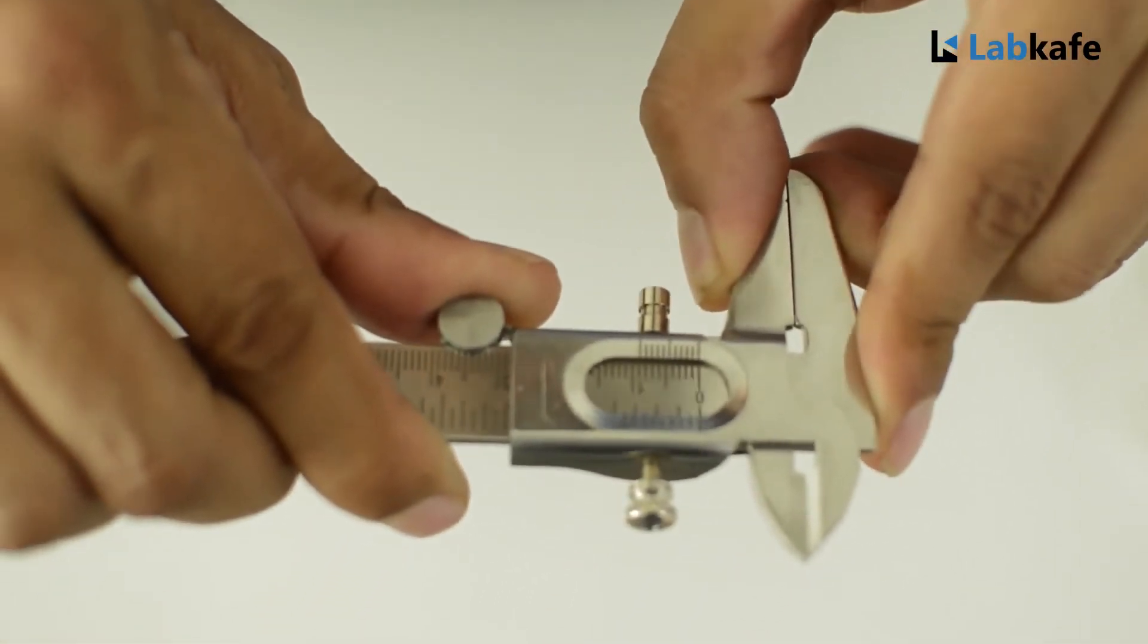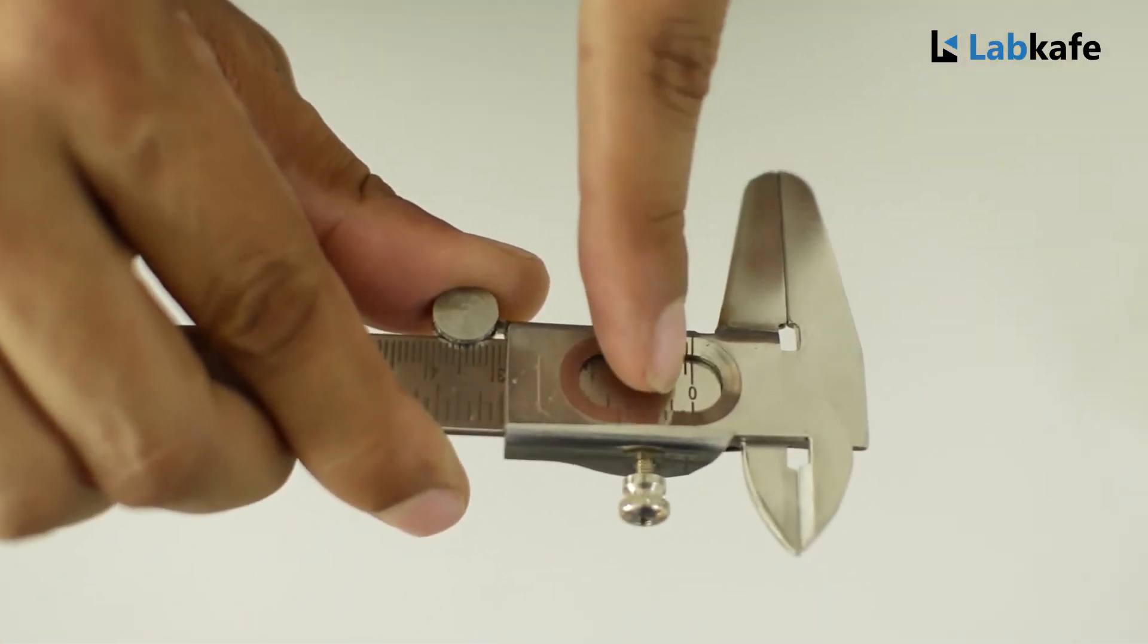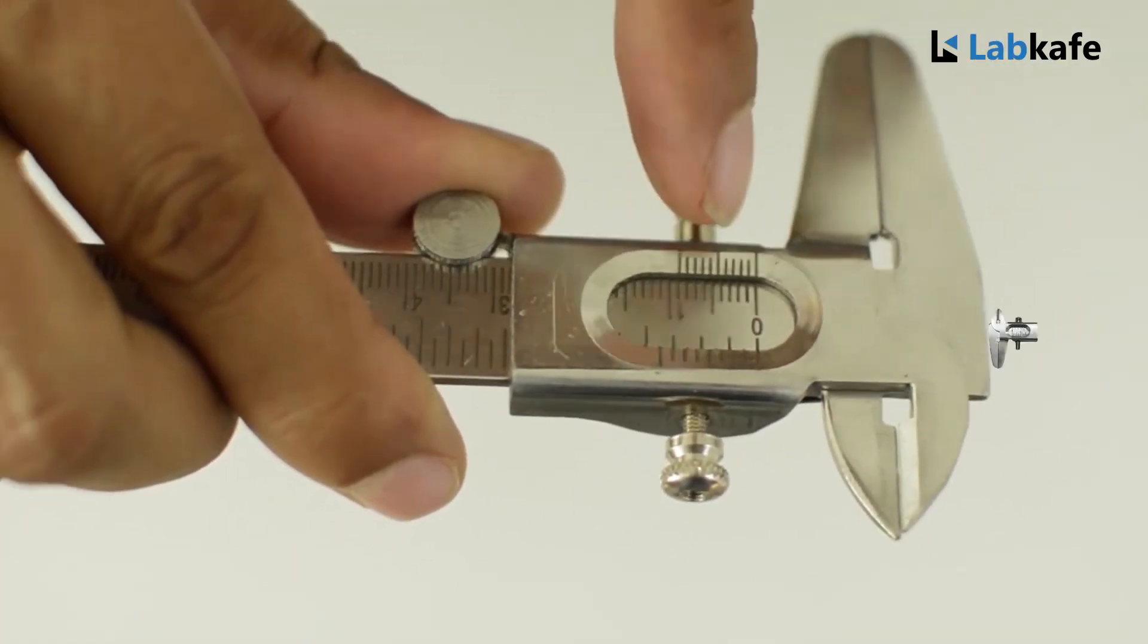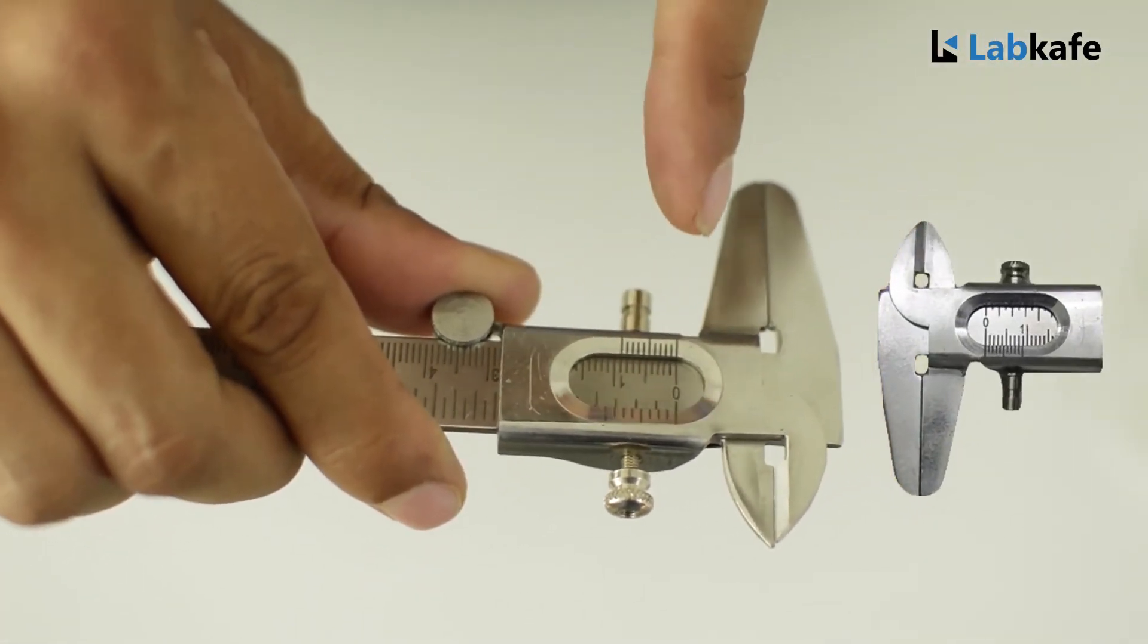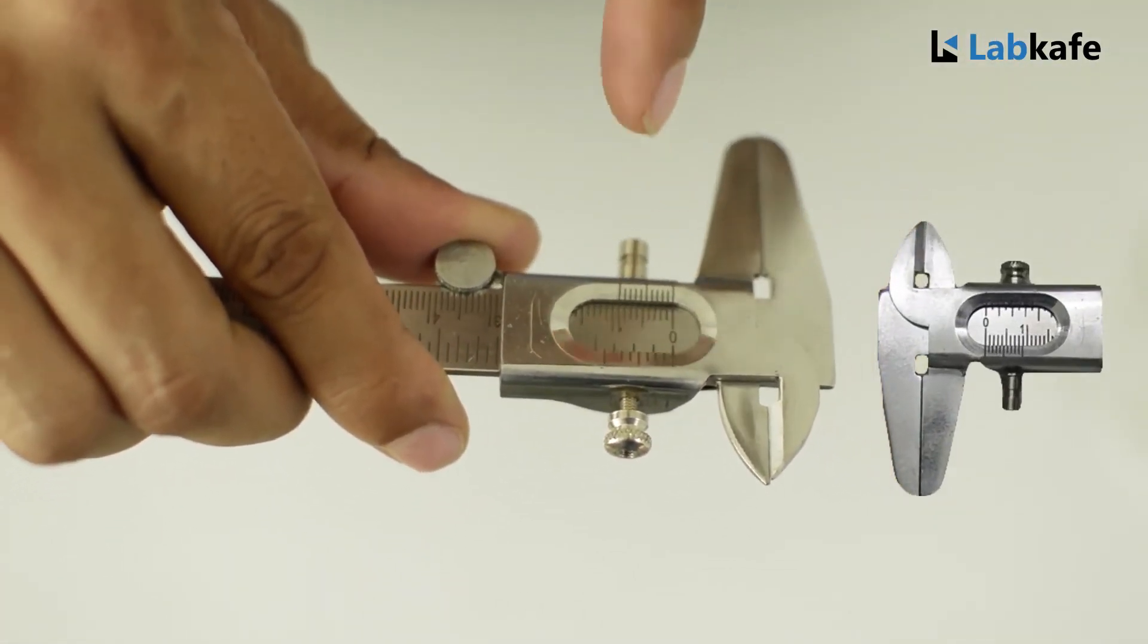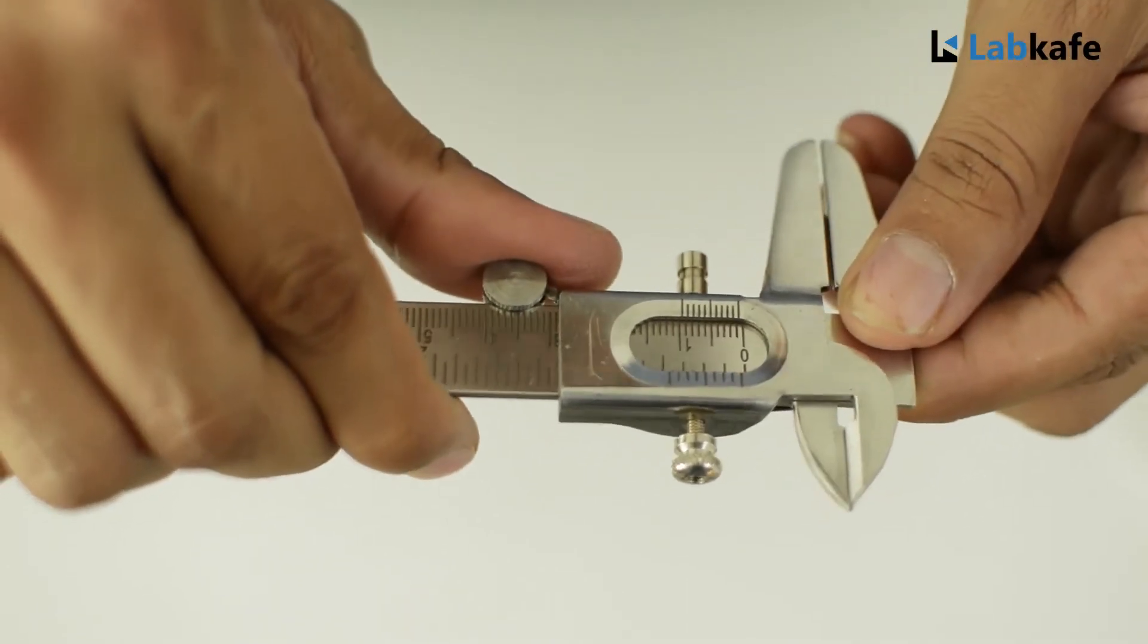Now when these two jaws are brought together intact, the vernier zero and the main scale zero should be on the same line. In that case, we say there is no zero error.